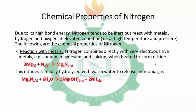Now for chemical properties. Due to its high bond energy, nitrogen tends to be inert — unreactive — when it reacts with metals, hydrogen and oxygen only at elevated conditions, meaning high temperature and pressure, and probably in the presence of catalysts. Nitrogen combines directly with electropositive metals like sodium, magnesium, calcium and potassium when heated to form nitrides. For example, magnesium reacts with nitrogen gas to form magnesium nitride Mg3N2, and this nitride can be hydrolyzed with warm water to release ammonia gas — magnesium nitride reacts with water to form magnesium hydroxide and ammonia gas.